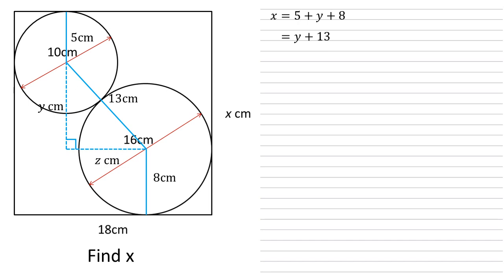Therefore if we can work out the bottom edge of this triangle which I'm going to call Z we can use Pythagoras's theorem to find Y.